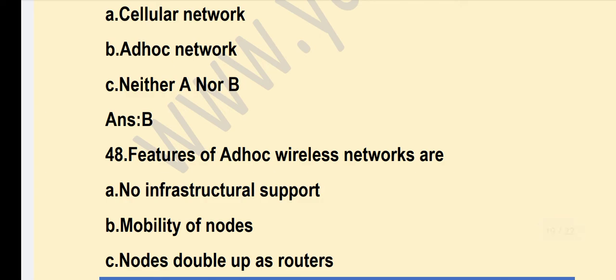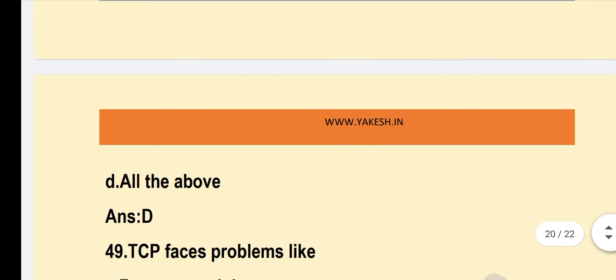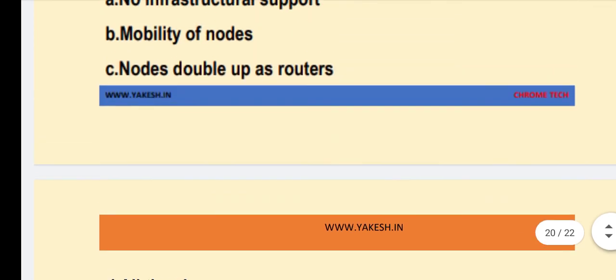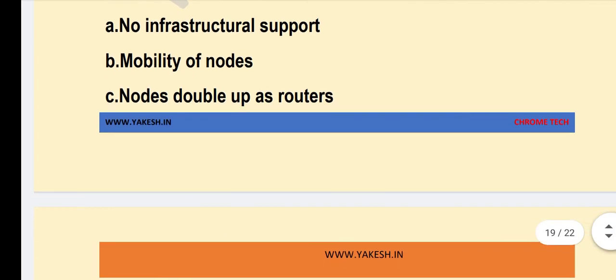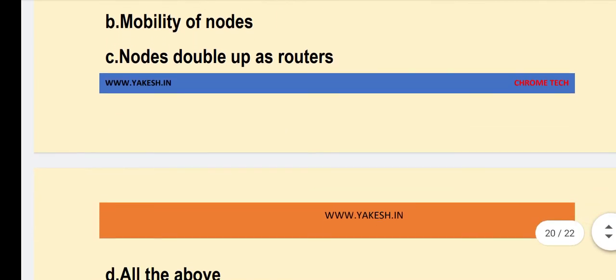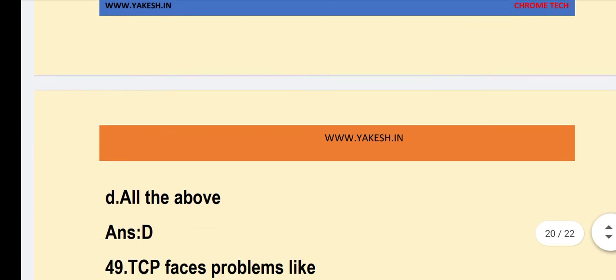Features of ad hoc wireless networks include: no infrastructure support, mobility of nodes, and nodes act as both host and router. All answers are correct, so Option D — all of the above — is the correct answer.